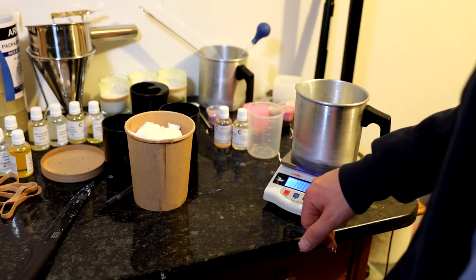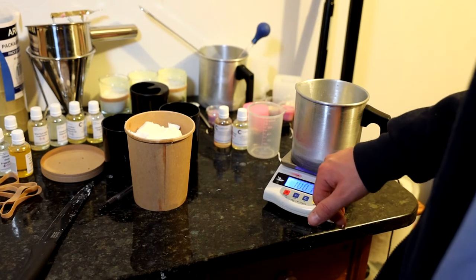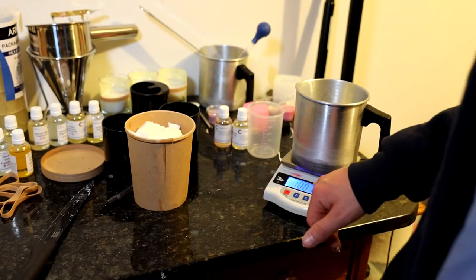Okay, so that's the wax measured out. I'm going to put that on the melter and get that melted down. I'm going to melt this down to about 75 degrees, this is suggested for that. So that's what I'm going to melt that down to now.